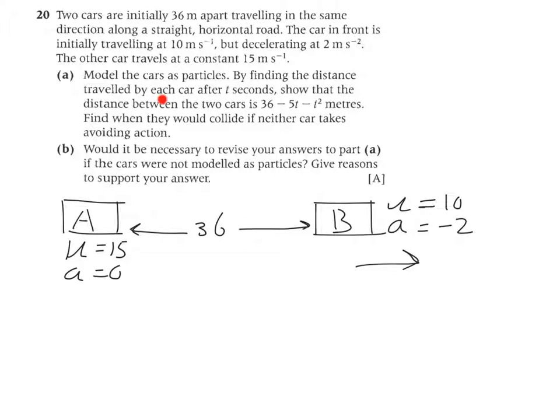Now using all of that information, we have to show that the distance between them can be given as an expression like that. Let's find the displacement of car A. SA - let's pick UT plus half AT squared. You take one of the equations of motion that suits this situation best. So SA equals UT, its initial velocity times time, and then the rest is zero because it has constant velocity.